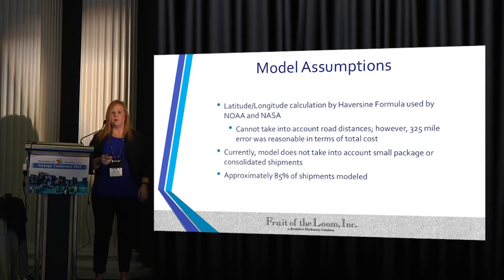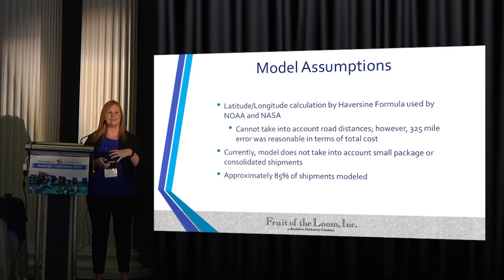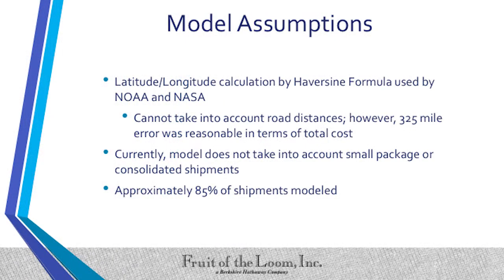Regarding model assumptions: this version of the model was built in AnyLogic 6 and has been transformed into AnyLogic 7 for this demonstration. We primarily used latitude and longitude calculations using the Haversine formula, which is used by NOAA and NASA, for as-the-crow-flies distances for new distribution centers. This calculates the distance from a new distribution center placed in the model to the different customers. Approximately 85% of shipments were modeled, with no small package shipping.